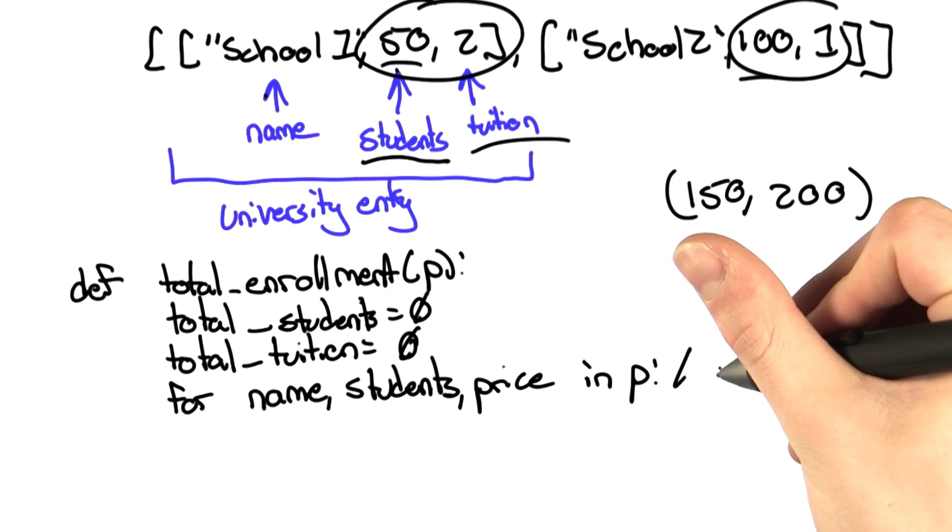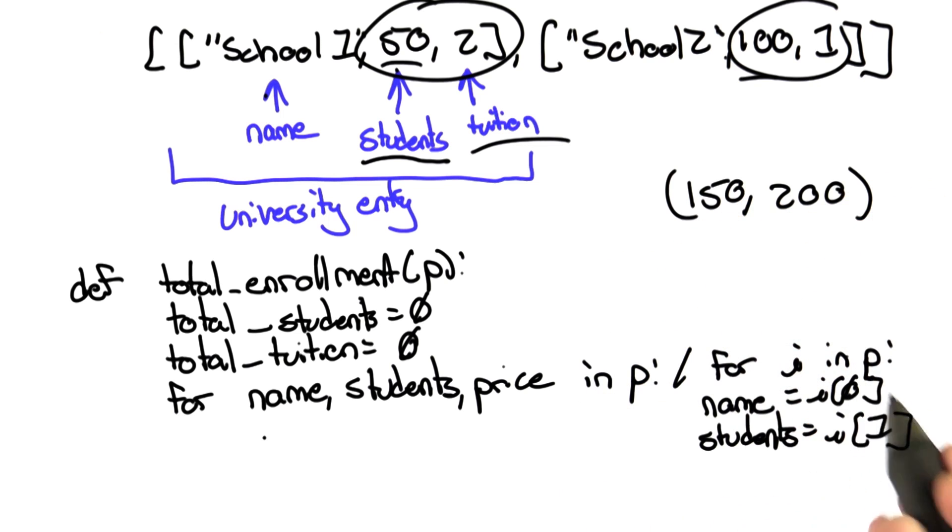If I had the other version, where I just say for i in p, and then assign the variable names, that's all we're doing here. It's just a little shortcut to save you the time of writing the three lines to write this out.